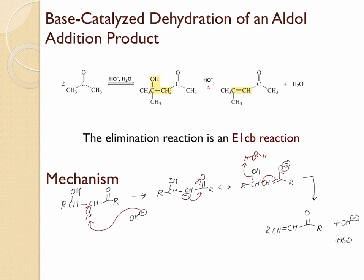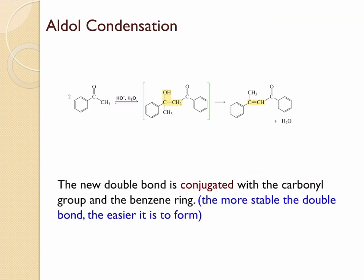Like the E1 reaction, the E1CB reaction also has two steps. The first step forms the conjugate base — if this conjugate base is not stabilized, the elimination reaction will not proceed. The second step eliminates the water molecule. In some cases, the aldol condensation reaction can be conducted without additional heat — for example, when the newly formed double bond is in conjugation with a benzene ring, the molecule is more stable, so dehydration is much faster and additional heat is not required.